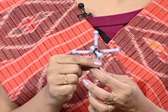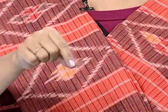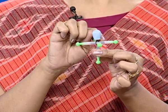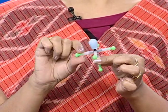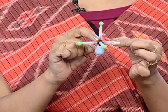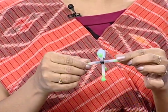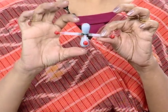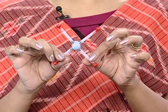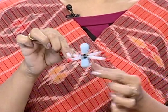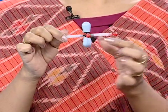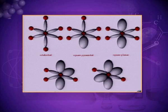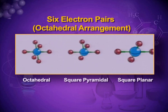Distortions are possible in the octahedral geometry when there are lone pairs. When one out of six positions is occupied by a lone pair, there is lone pair–bond pair repulsion. When two positions are occupied by lone pairs, as in XeF4, the shape is square planar. You can see the two blue lobes representing lone pairs of electrons. The distorted shapes from octahedral are: octahedral, square pyramidal, and square planar.